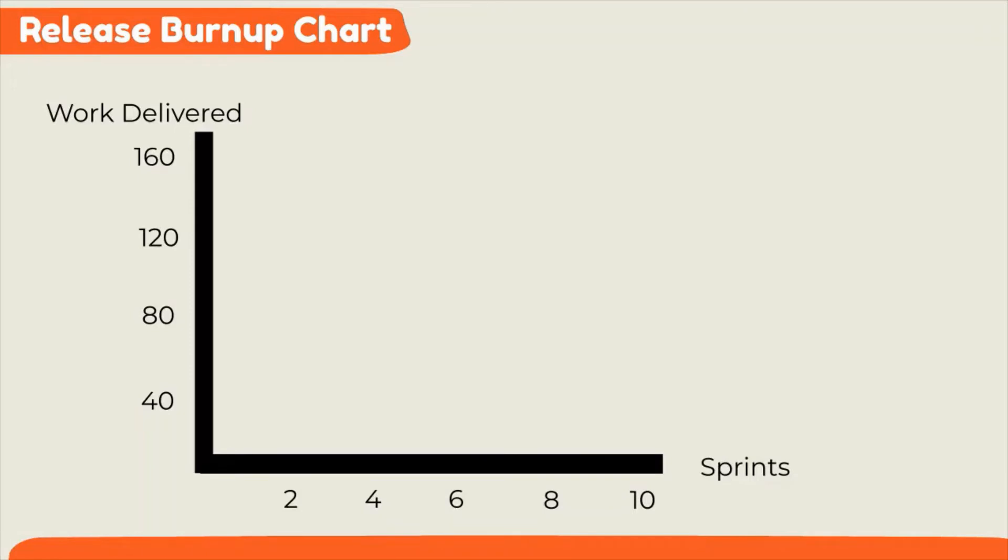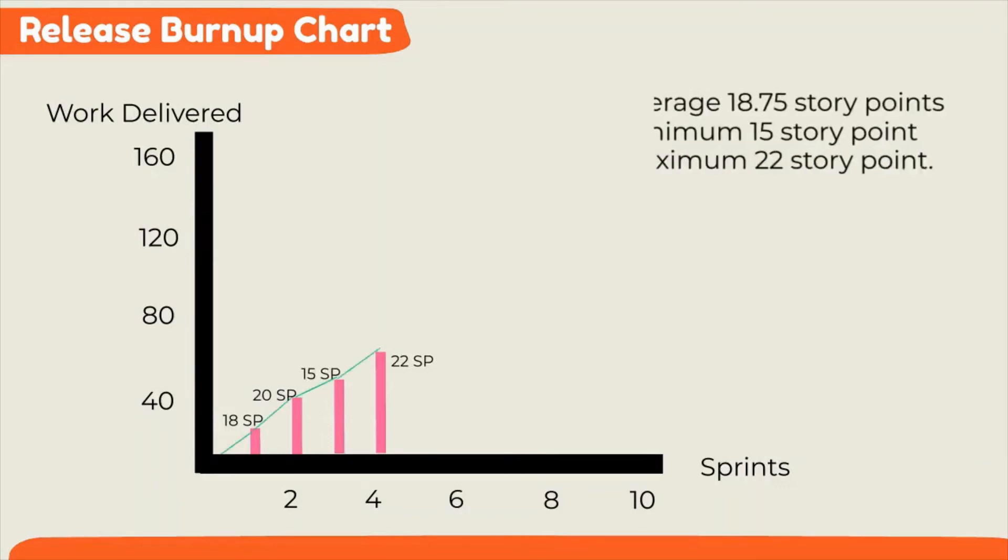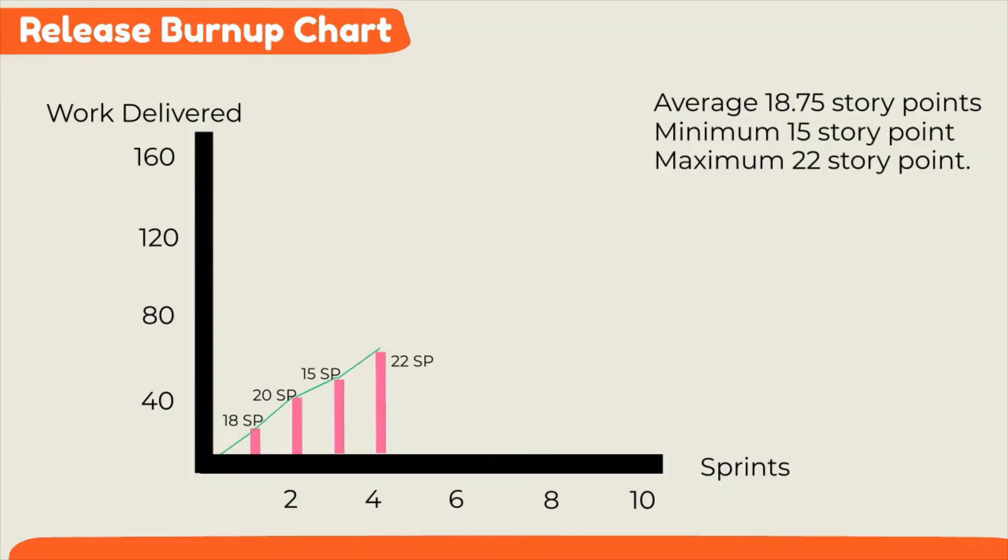Product owner can use this data on the predictability of the team. In this example, the team has delivered 18 story points in the first, 20 in the second, 15 in the third, and 22 in the fourth sprint. We see the team has delivered an average of 18.75 story points, minimum 15 story points, maximum 22 story points.